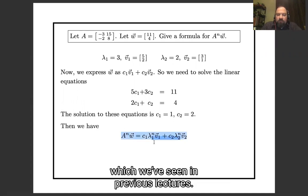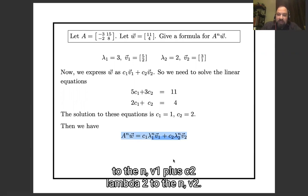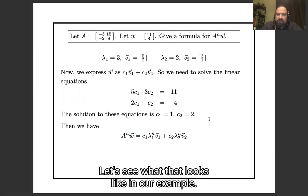And so then here we have this formula, which we've seen in previous lectures: A to the n times w is going to be c₁λ₁ⁿv₁ plus c₂λ₂ⁿv₂. Let's see what that looks like in our example.